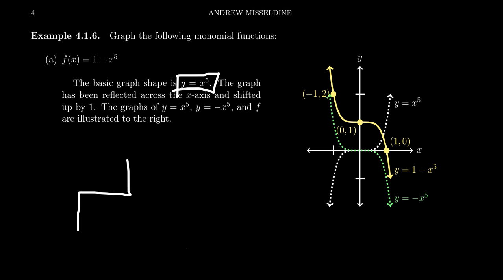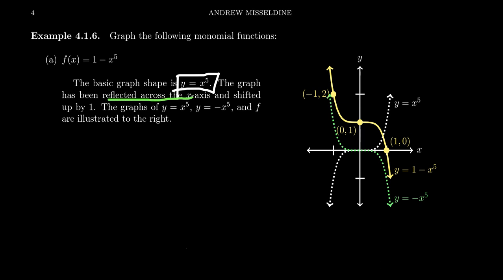It should be steeper than the standard x cubed, but not too steep. So you see this dashed curve right here in white. What have we done to this function? Well, there's a negative sign in front of x to the fifth, and that tells us that there's going to be some type of reflection. Sticking a negative sign in front of our function is going to be a reflection across the x axis.